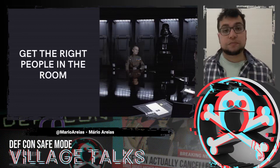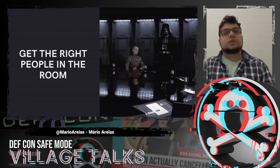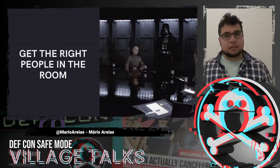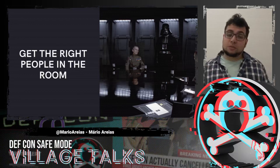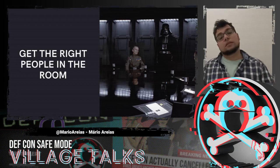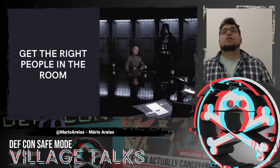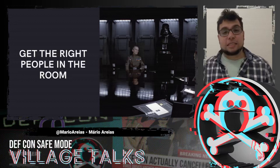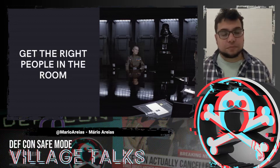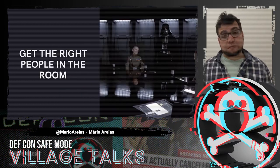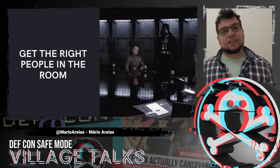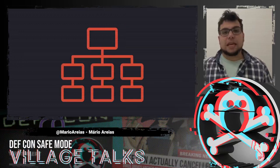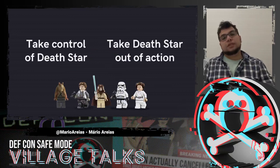Now you have the asset — the Death Star — and you have the personas, so it's time to build the attack tree. The first thing you need to do is get the right people in the room. Remember, threat modeling should be a collaborative exercise. So you try to get everybody inside the room — the Death Star designers and architects, and your own security team. You even get Darth Vader to do an introduction for the meeting, to give some motivation — a kind of C-level executive intro. Then you start to run the facilitation session.